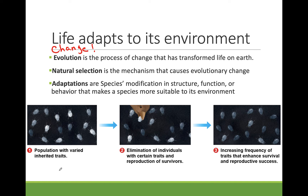Dark beetles tend to have dark babies, and light beetles tend to have light babies. Birds are predators that hunt using vision. The light beetles stand out against the environment and are more likely to get eaten — this is natural selection. Over time, the dark beetles have more babies. Several generations later, the beetle population looks much darker. This is an adaptation: having dark coloring to camouflage in a dark environment.